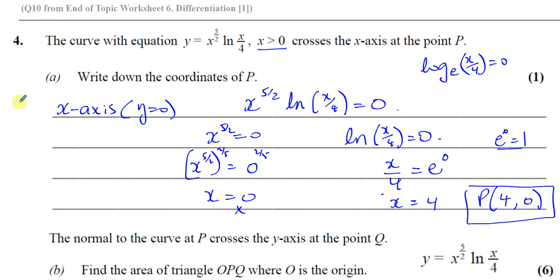We can't accept x equals zero as an answer because the ln of zero is undefined. That's why x has to be greater than zero.